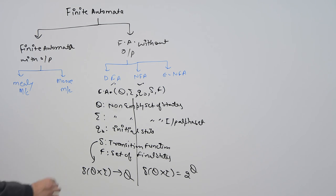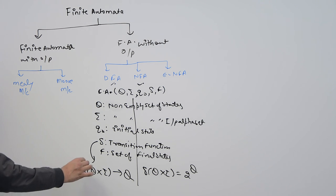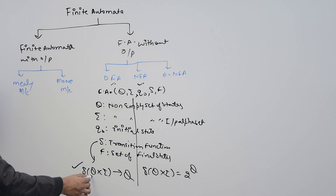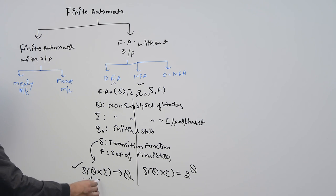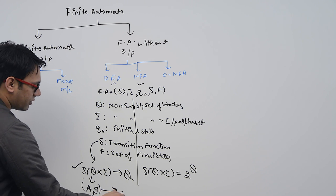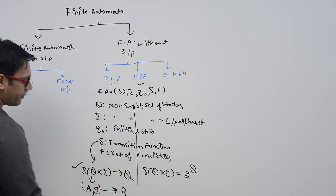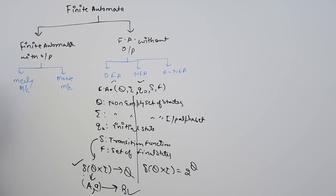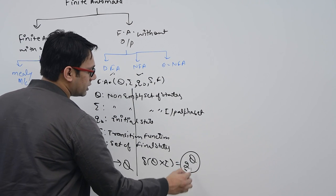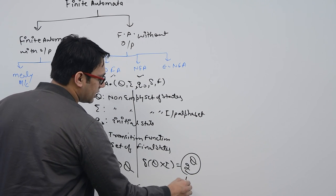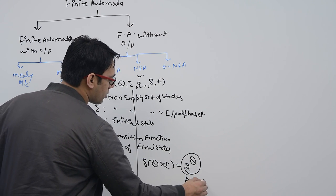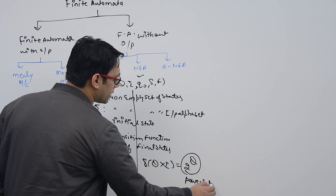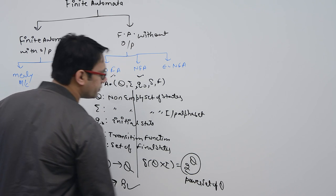The δ function means if you are at a particular state, for example state A, and you see a symbol 'a', then you can go to a single state, for example B — that means only one single state in DFA. But in NFA, 2 raised to power Q represents a power set — the power set of Q.